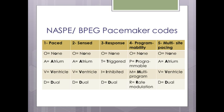With multi-site pacing, we insert an electrode in each ventricle — left and right — or place two electrodes in the atria. This ensures that electricity will pass through at least one electrode regardless of the heart's condition.